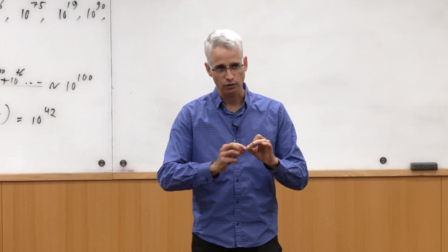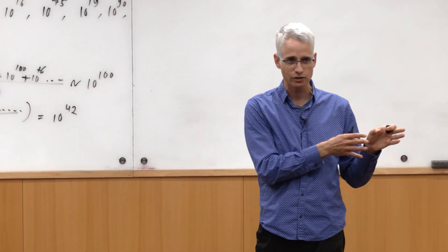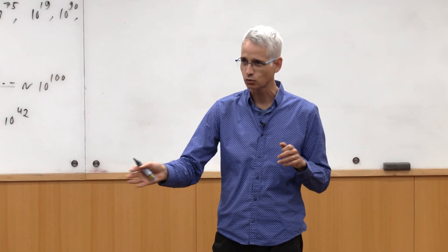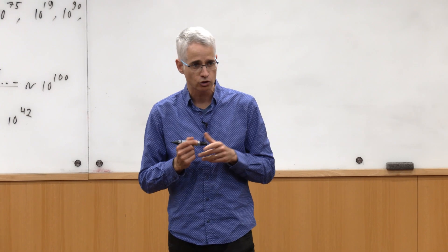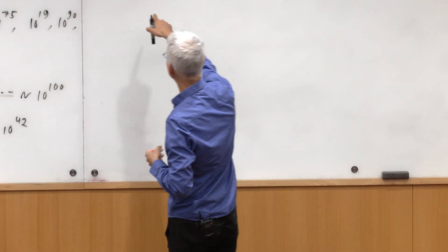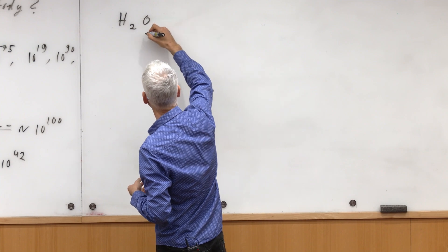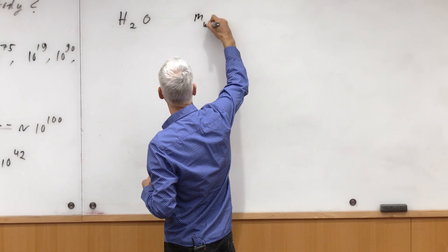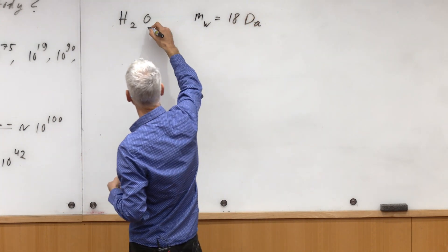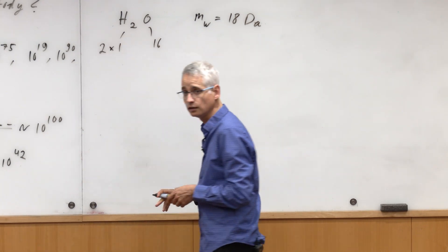Usually the Avogadro number is like the wormhole or whatever, the door to take you from this world to that world. And there you just have to think, how do I connect these things? You could connect it by knowing, okay, this weighs in terms of mass of water, it's 18 Dalton. How do I know that? Because this is 16 and this is twice one, so I got 18 Dalton.